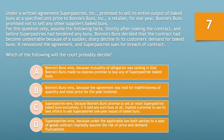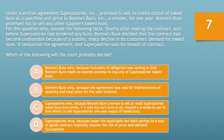Question number seven. Under a written agreement, Super Pastries, Inc. promised to sell its entire output of baked buns at a specific unit price to Bonnie Buns, Inc., a retailer, for one year. Bonnie Buns promised not to sell any other supplier's baked buns. Shortly after making the contract, Bonnie's Buns decided the contract had become undesirable because of a sudden sharp decline in its customers' demand for baked buns. It renounced the agreement, and Super Pastries now sues for breach of contract.